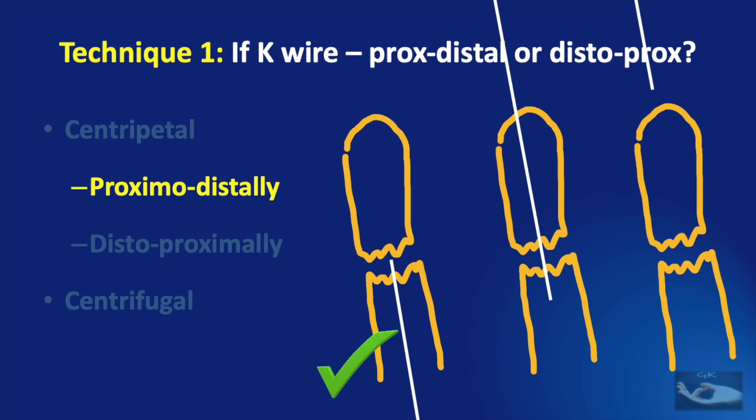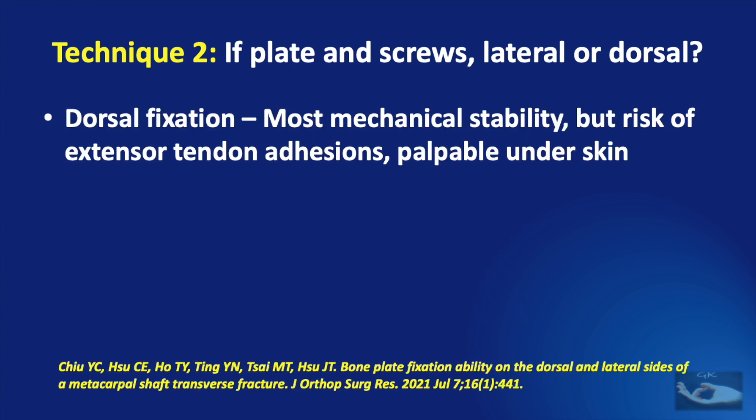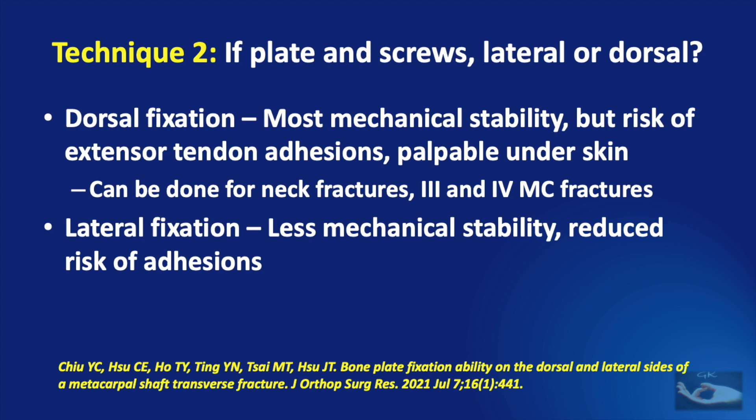If we are going to use plate and screws for fixation of metacarpal fractures, should we place them on the lateral aspect or the dorsal aspect? Dorsal fixation gives the most mechanical stability, but there is a risk of extensor tendon adhesions and it may be palpable under the skin. So it can be reserved for neck fractures and third and fourth metacarpal fractures, while lateral fixation has less mechanical stability but a reduced risk of adhesions.